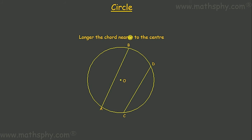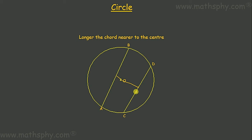The next theorem: the longer the chord, the nearer it is to the center. In a circle with center O and two chords AB and CD, chords drawn nearer to the center are longer than chords drawn farther from the center. As the distance from the chord to the center decreases, the chord length increases; as we go farther from the center, chord length decreases.